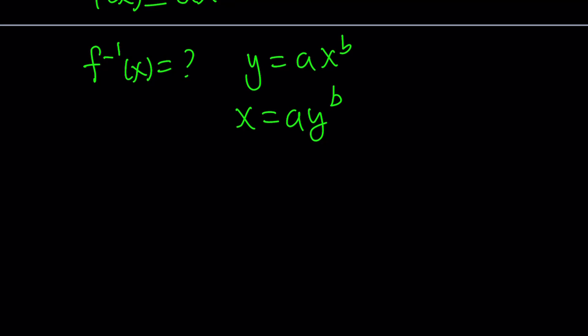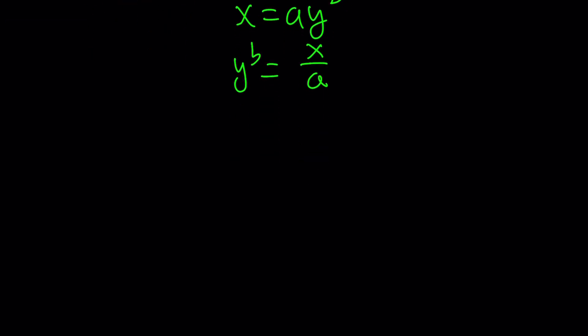So, to be able to solve for y here, we're going to divide by a again. You see, it's almost always the first step. And, then, you're going to raise both sides to the power 1 over b. Because, that's going to give you y. Y is going to be x over a to the power 1 over b. In other words, that's going to be some type of root. So, this is f inverse.